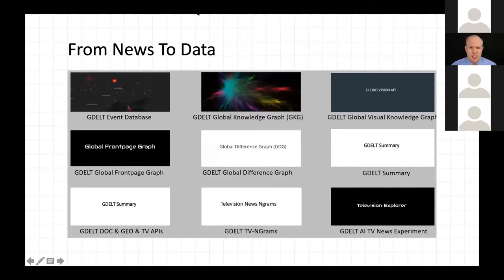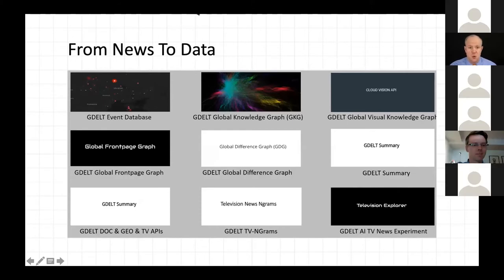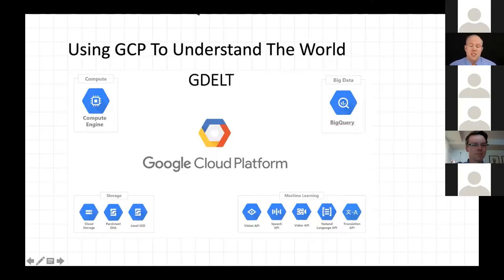GDELT itself is an enormous data set — it encompasses tens of trillions of data points these days, and has incorporated a huge number of data sets. But today we're going to focus primarily on the visual dimension of this. GDELT is based in Google's Cloud, so it's using all these different tools, especially in the visual realm — things like Vision API, Video API, and Speech-to-Text API for transcription, as well as BigQuery and Inference API.